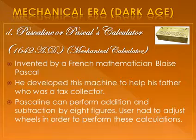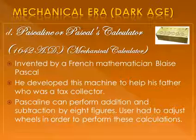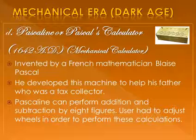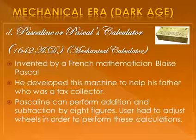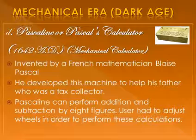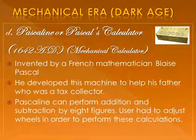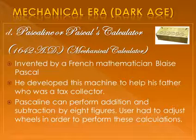The next machine is Pascal's Calculator, also called Pascaline or Mechanical Calculator. It was invented by French mathematician Blaise Pascal. He developed this machine to help his father, who was a tax collector. Pascal's Calculator could perform addition and subtraction, and it could handle up to 8 figures in calculation.